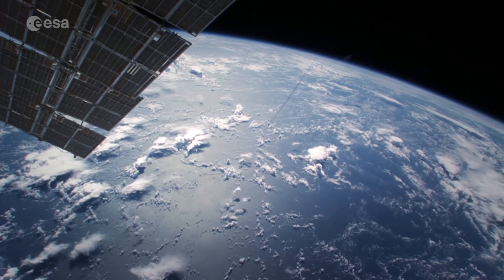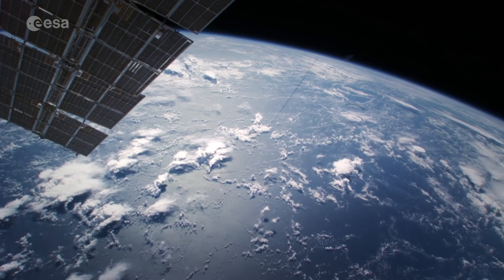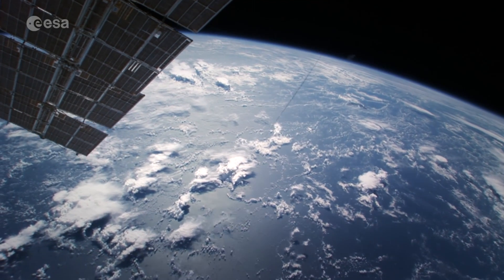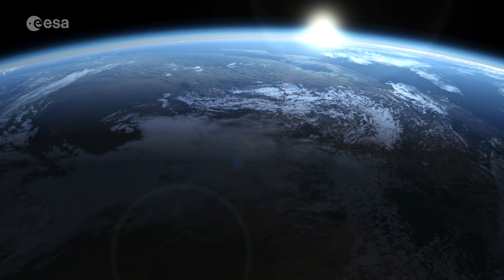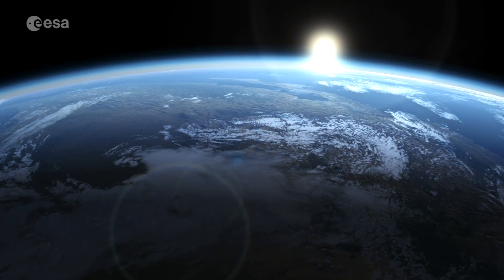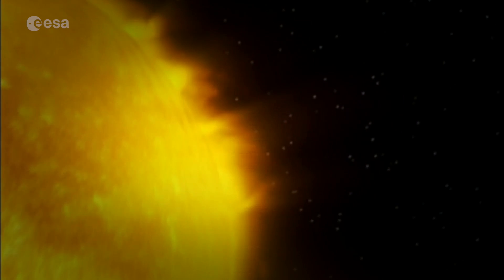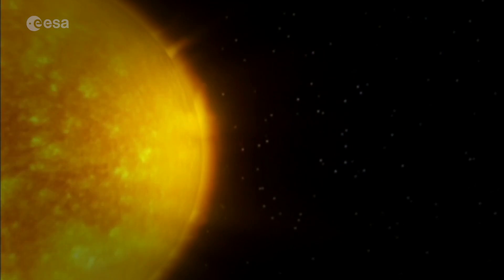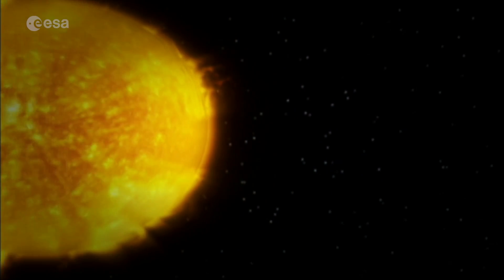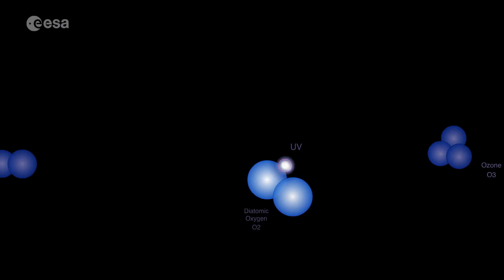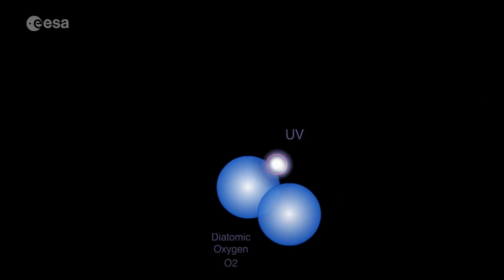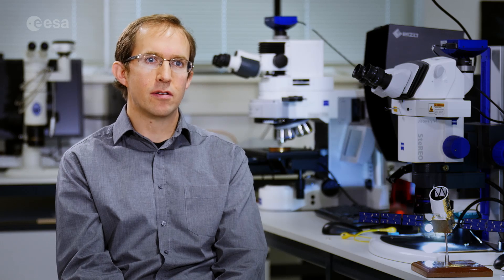This is two oxygen atoms bonded together. Now the region of space near to the Earth, called low Earth orbit, still contains some of this residual atmosphere. However, the high energy UV radiation from the sun breaks down the oxygen molecules into oxygen atoms. This is called atomic oxygen.